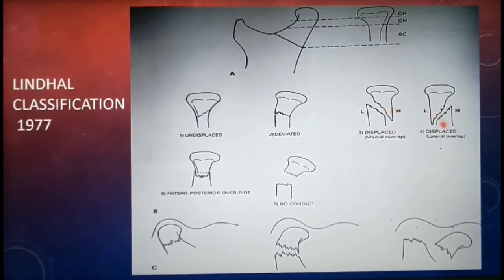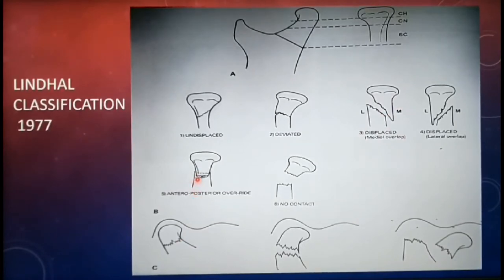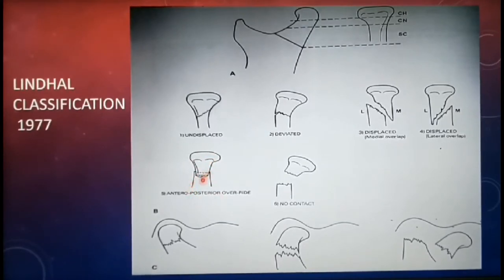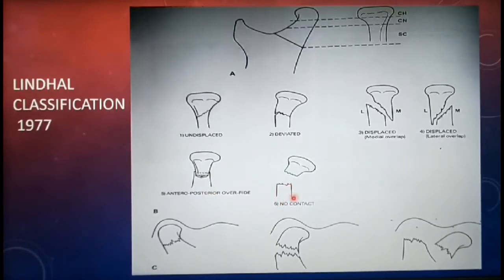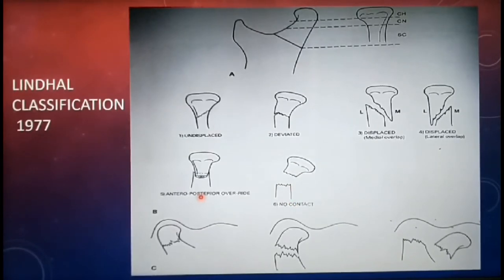There is also displacement with anterior or posterior overlap, where the condylar head is displaced anterior to the mandibular segment — posterior displacement is very rare. The sixth type is no contact, where there is no contact at all between the condylar fragment and the mandibular distal fragment. This completes the classification based on the relationship of the condylar segment to the mandibular fragment.